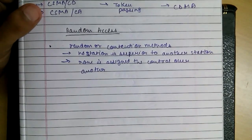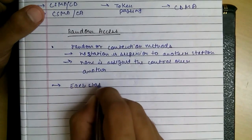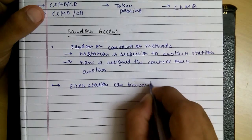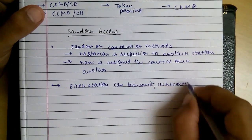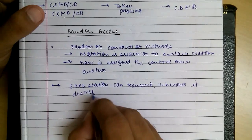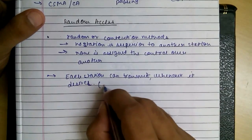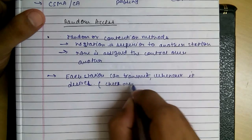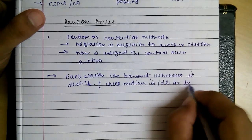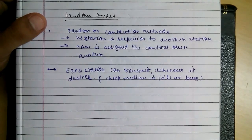What happens in these kinds of protocols is that each station can transmit whenever it desires, of course following the rules defined in any of the protocols, like checking if the medium is idle or busy.